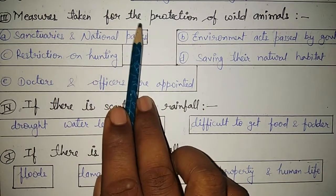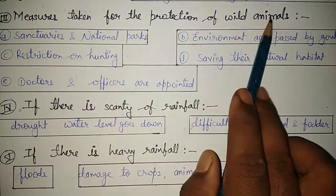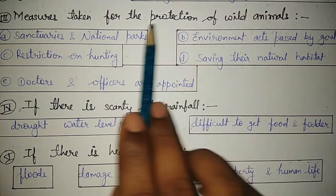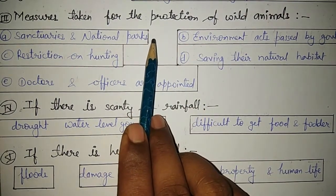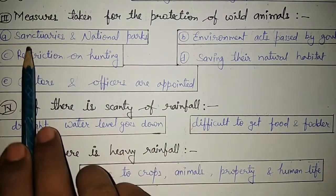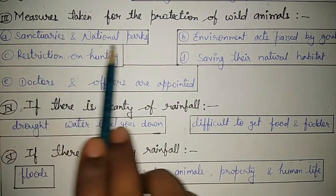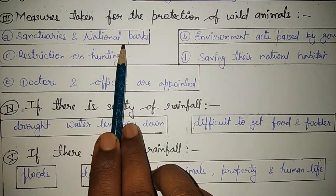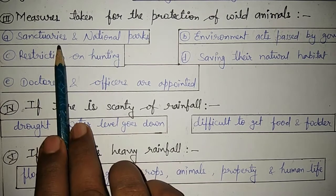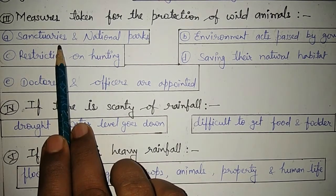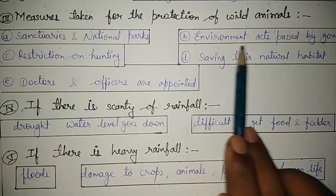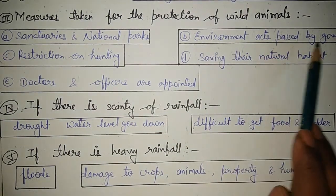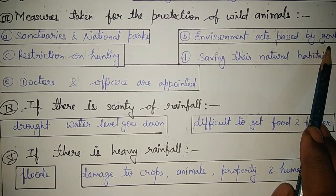The next topic is related to the protection of wild animals. For the development of wild animals, the government has taken very good decisions. The first are sanctuaries and national parks. In our state alone we have four national parks and eleven sanctuaries for the development of wild animals.